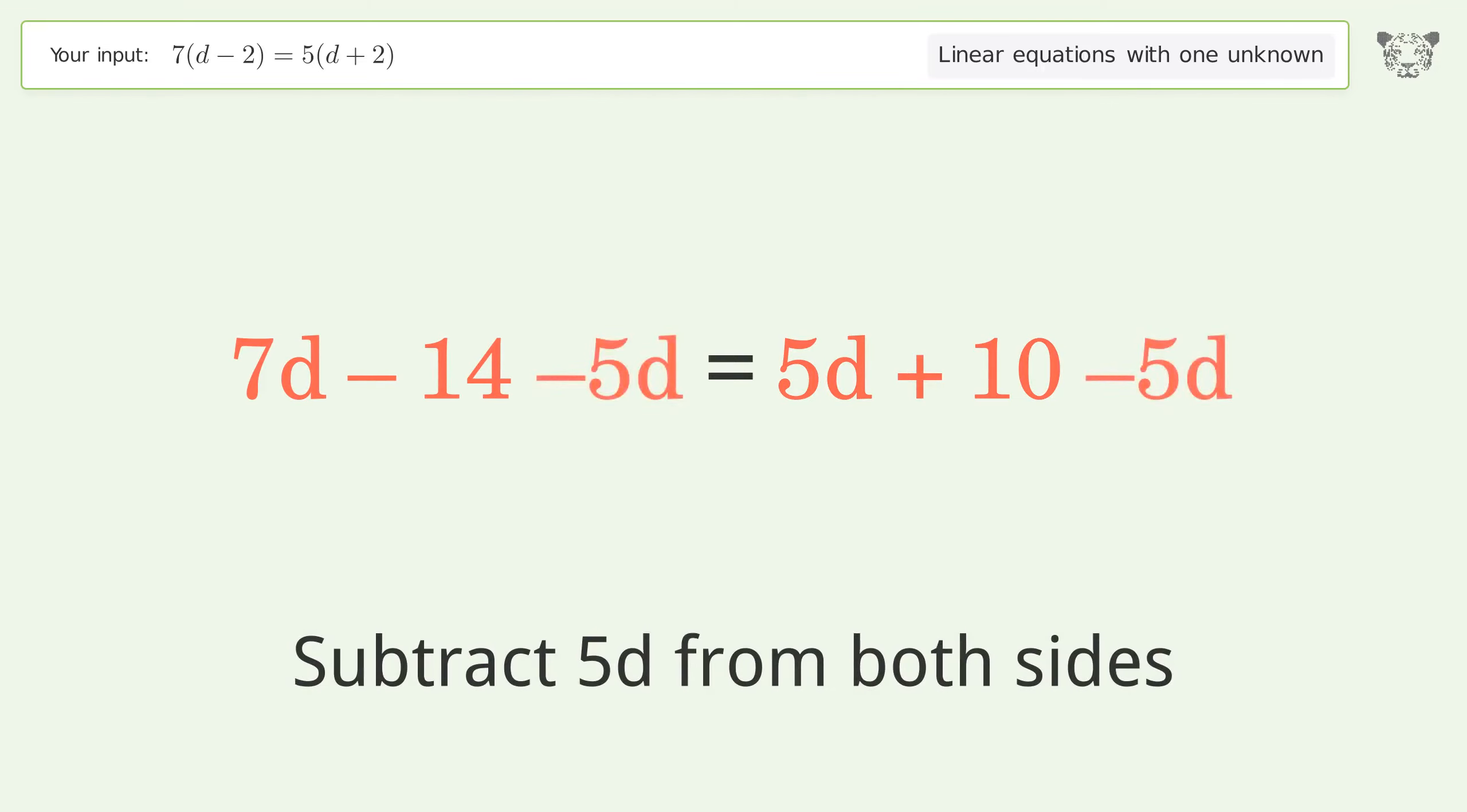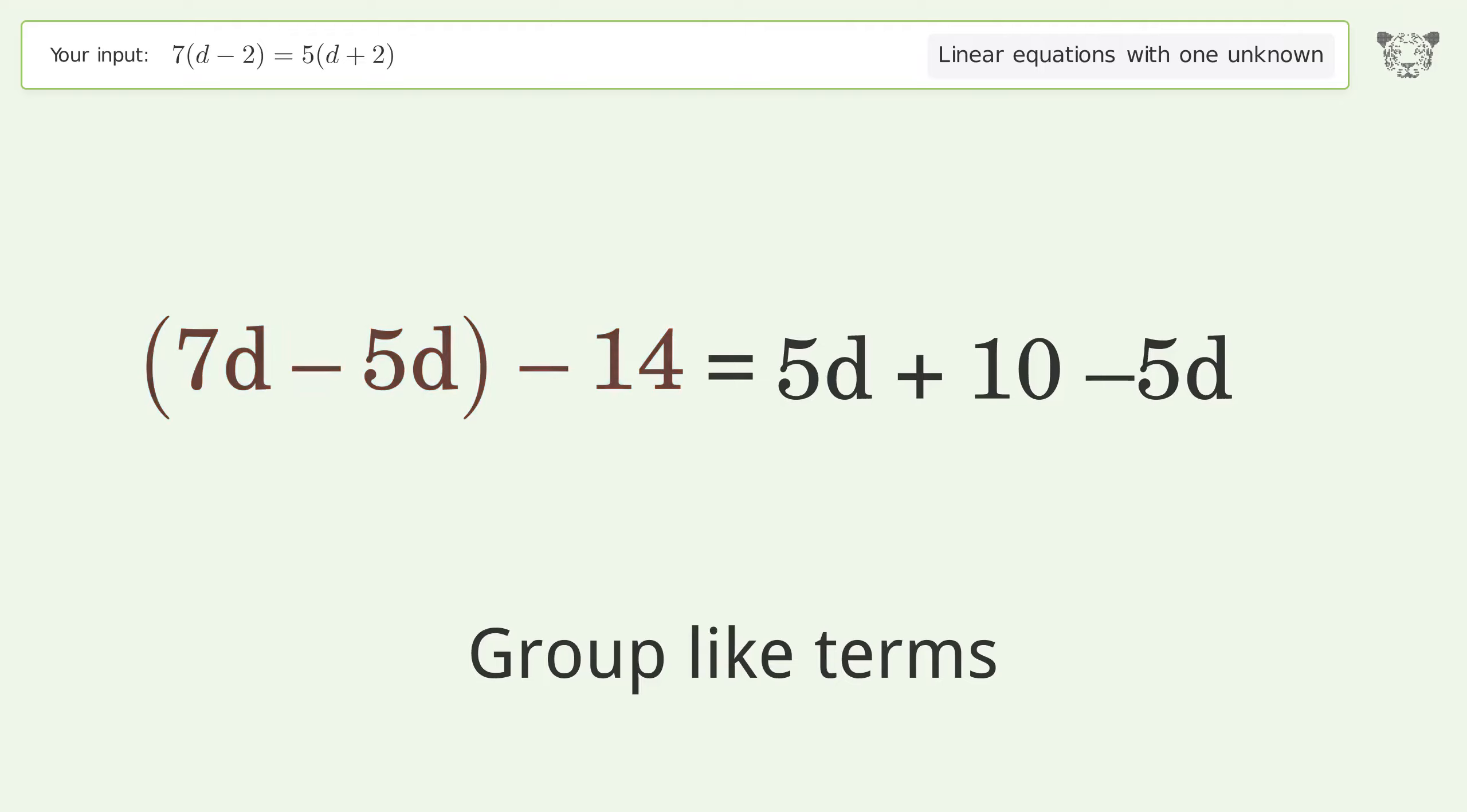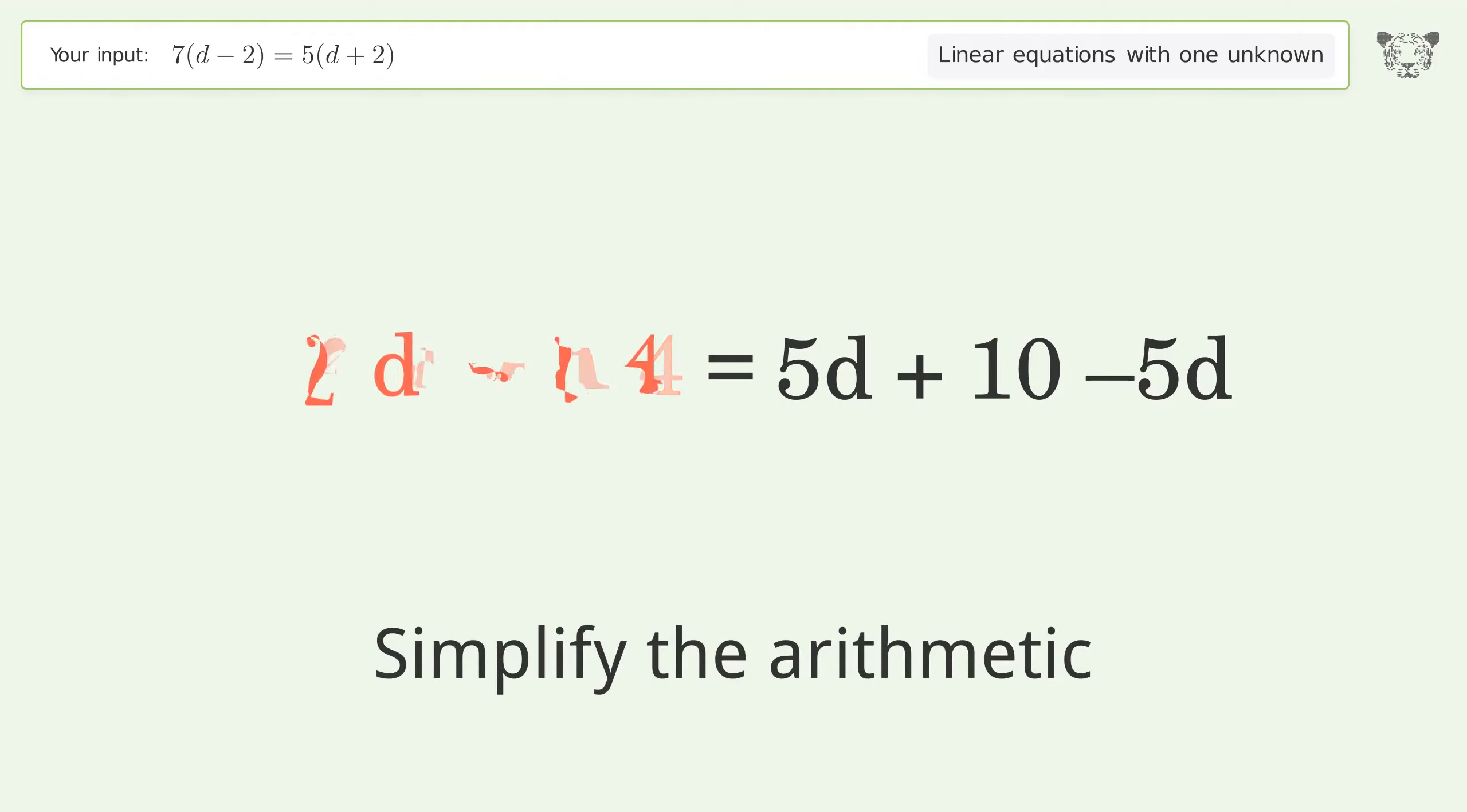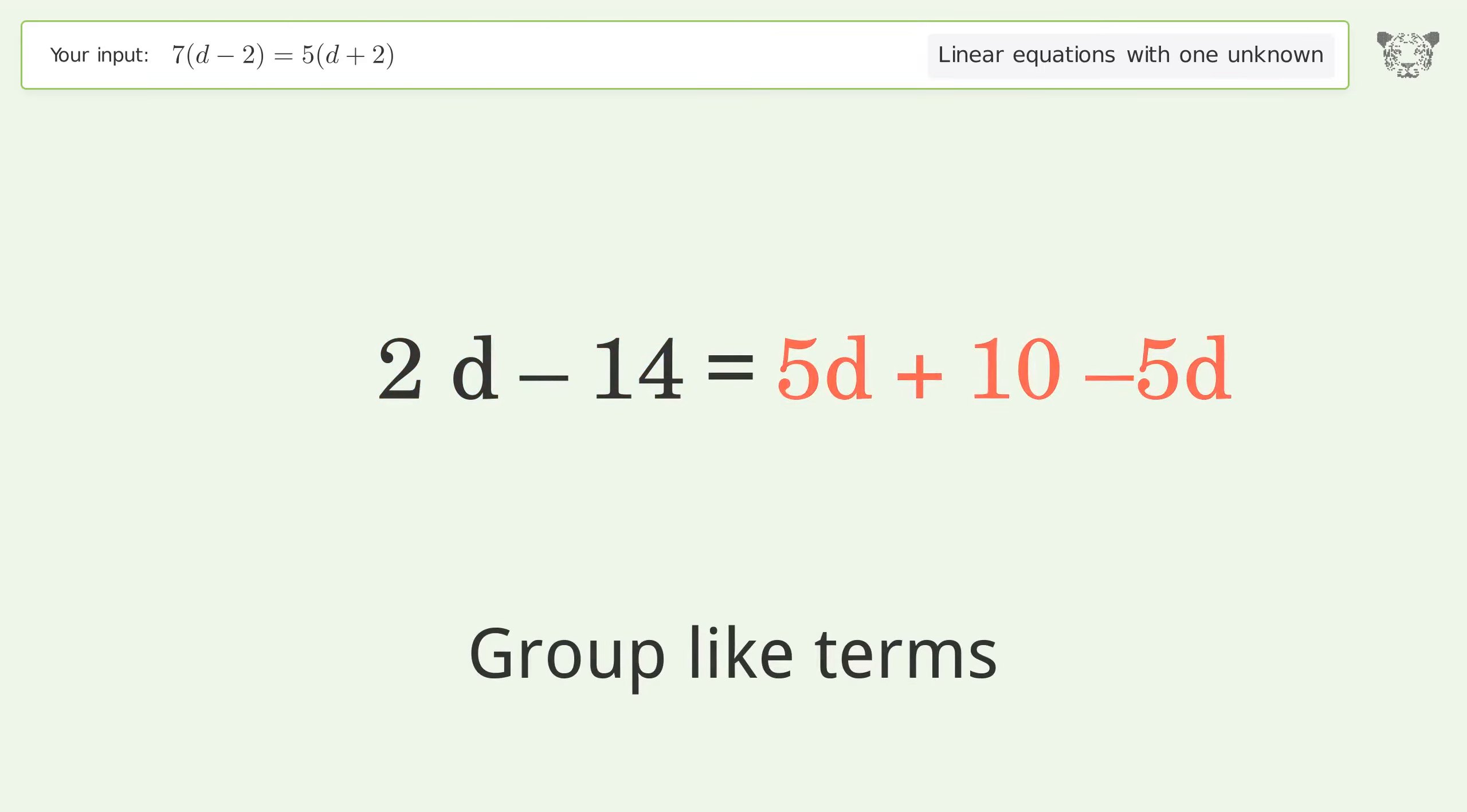Group all d terms on the left side of the equation. Subtract 5d from both sides. Group like terms. Simplify the arithmetic.